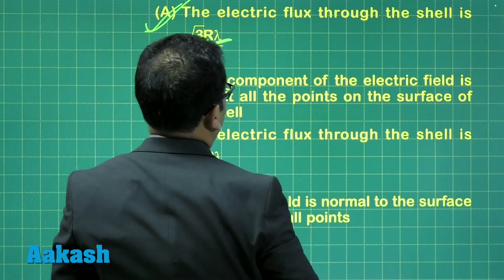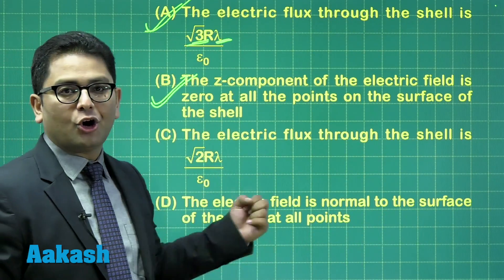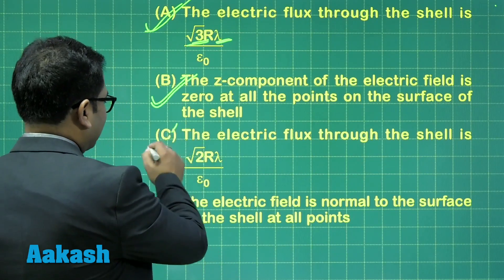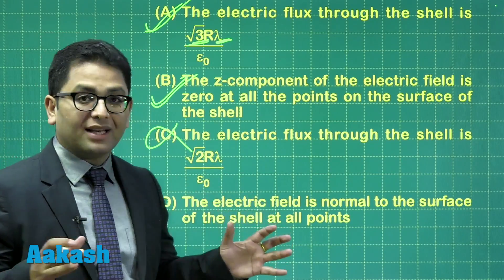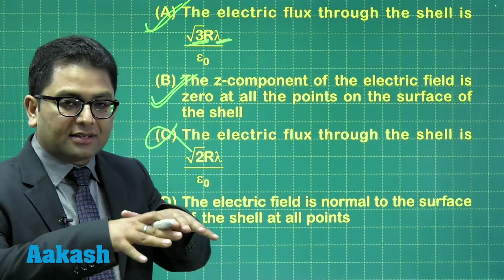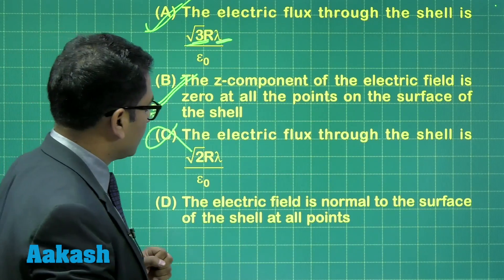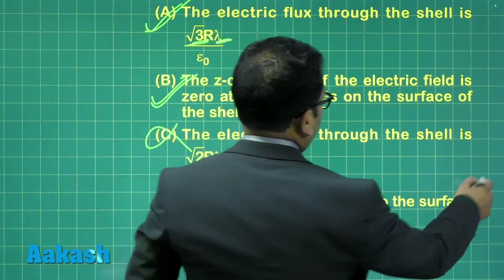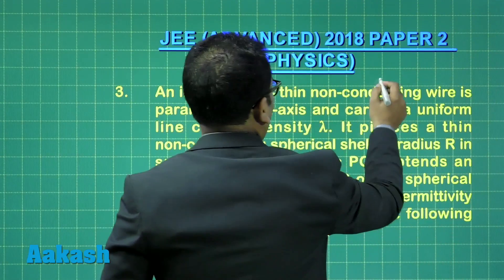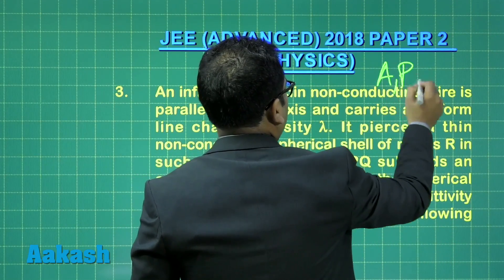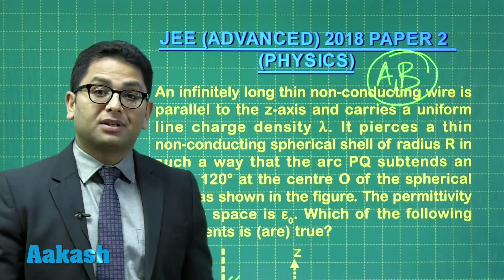Since option A is correct, option C — which states the electric field is normal to the surface of the shell — must be incorrect. The field is radially outward in a cylindrical manner, so it cannot be perpendicular to the spherical shell. Therefore, for question number three, the correct options are A and B.